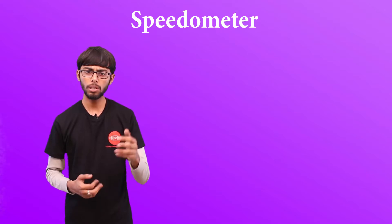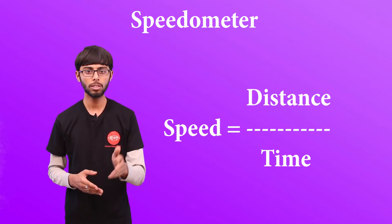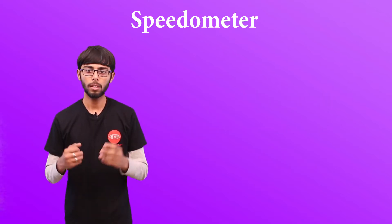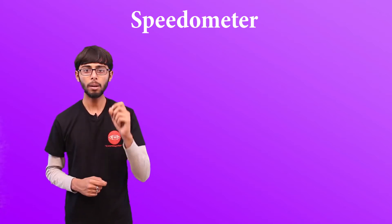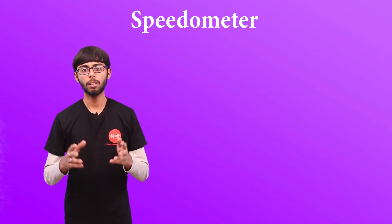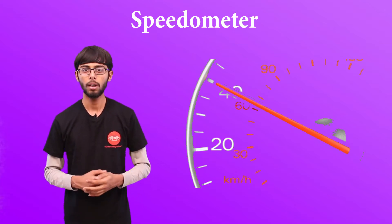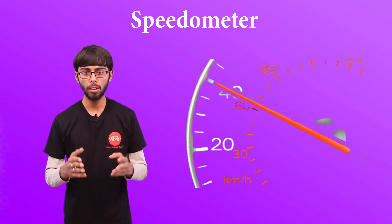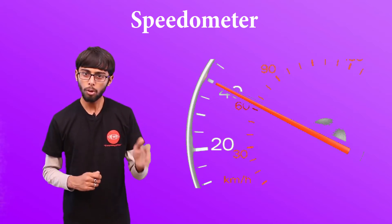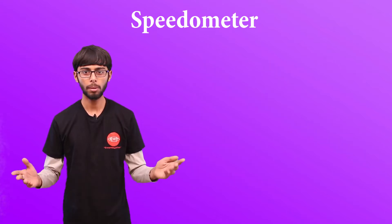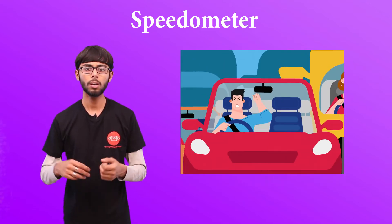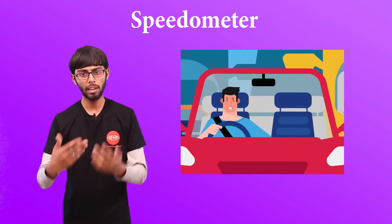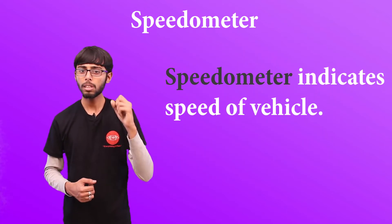We already know what speed is — the formula is: speed equals distance divided by time. The speedometer tells me my speed at a particular instant. For example, if my speedometer says 40 kilometers per hour, it means that if I could drive consistently at that speed, I would cover 40 kilometers in one hour. But since we encounter traffic signals and pedestrians, we can't drive at constant speed. So the speedometer tells me the instantaneous speed and not the average speed.